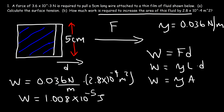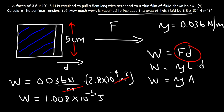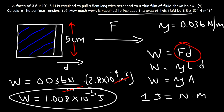The units we get are newtons times meters, which is force times displacement. One joule is equivalent to one newton times one meter, so the answer is 1.008 × 10⁻⁵ joules.